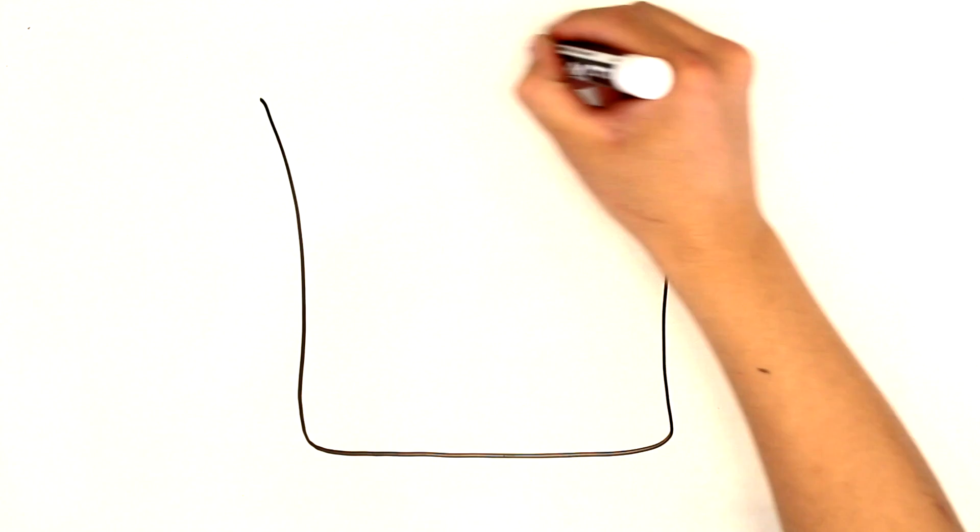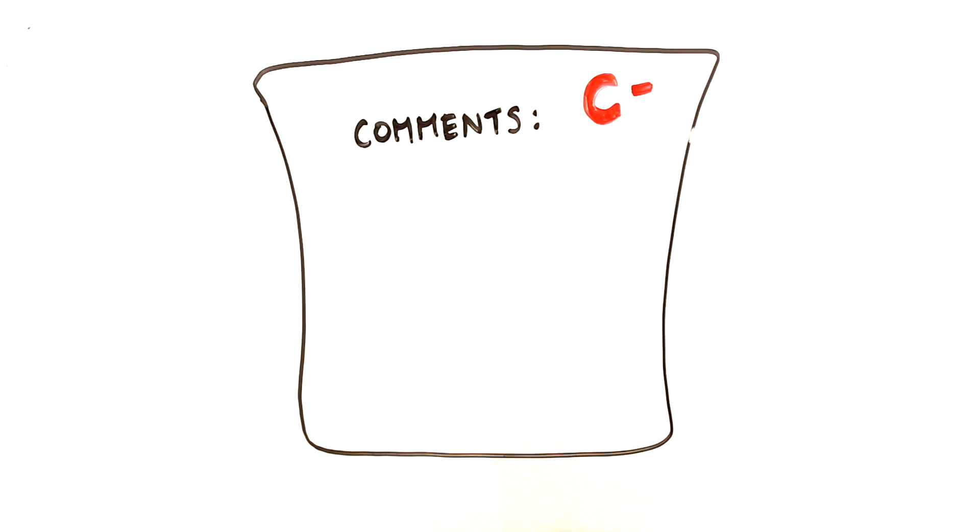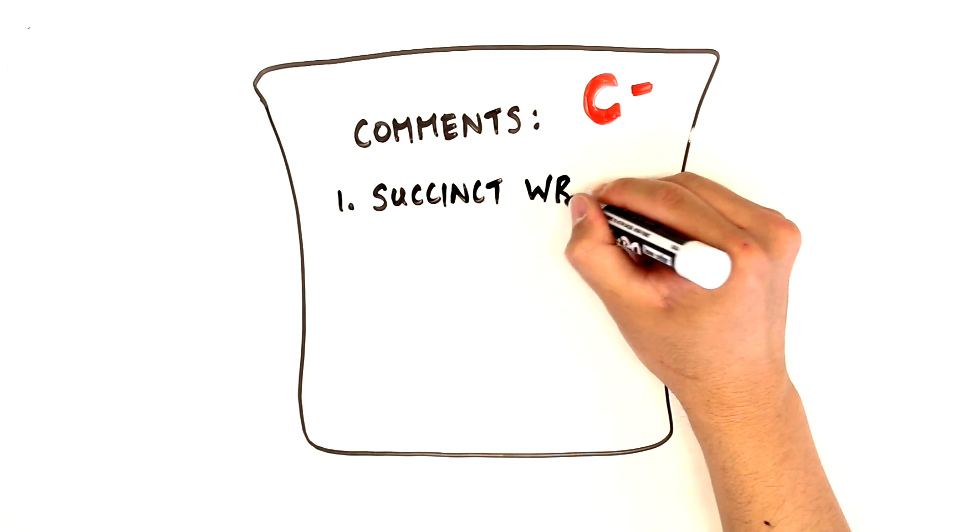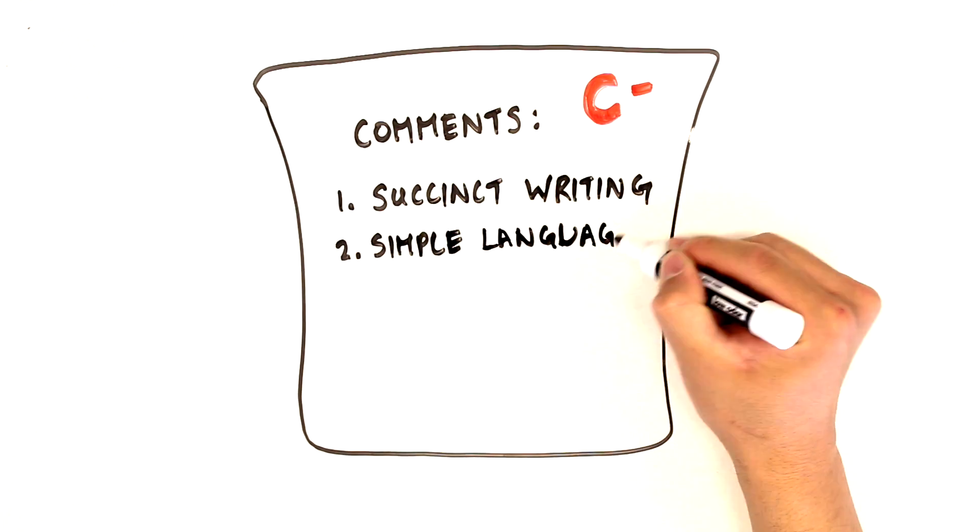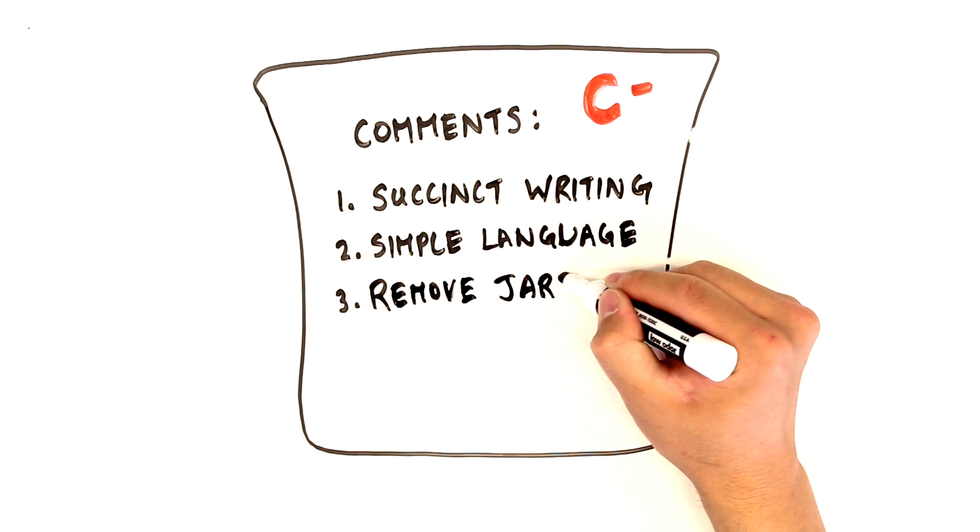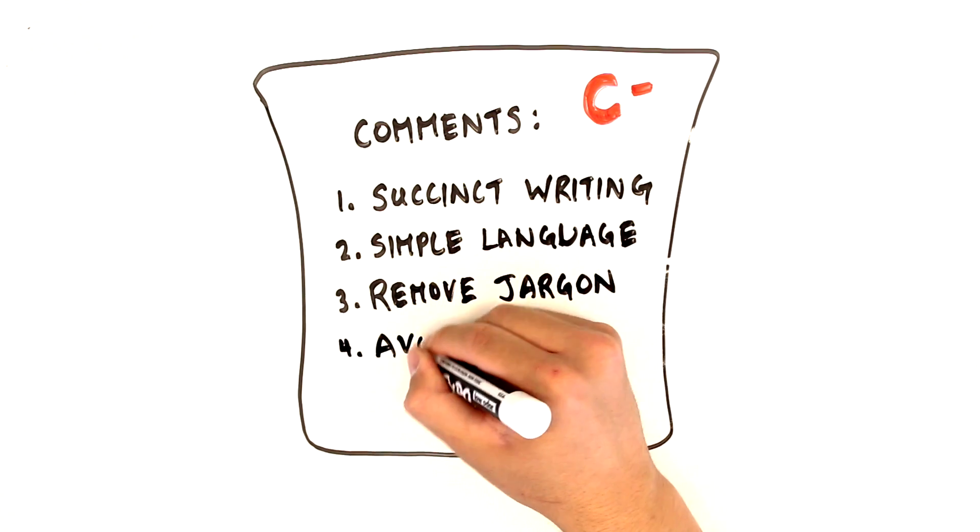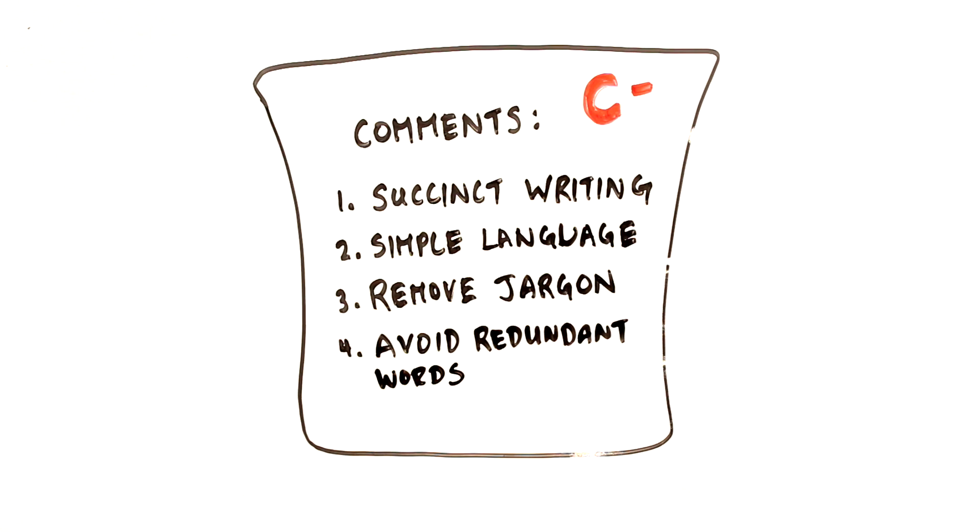Grammar Squirrel reads the comments closely. Her teacher says she needs to work on four things. She needs to write more succinctly, use simpler language, remove or explain technical jargon, and look out for redundant words in her writing.